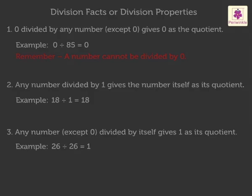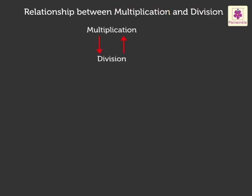Now, let us revise the relationship between two operations, multiplication and division. They are very closely related. Look at the numbers 5 and 3. To get the product, we multiply the numbers 5 and 3, which is equal to 15.